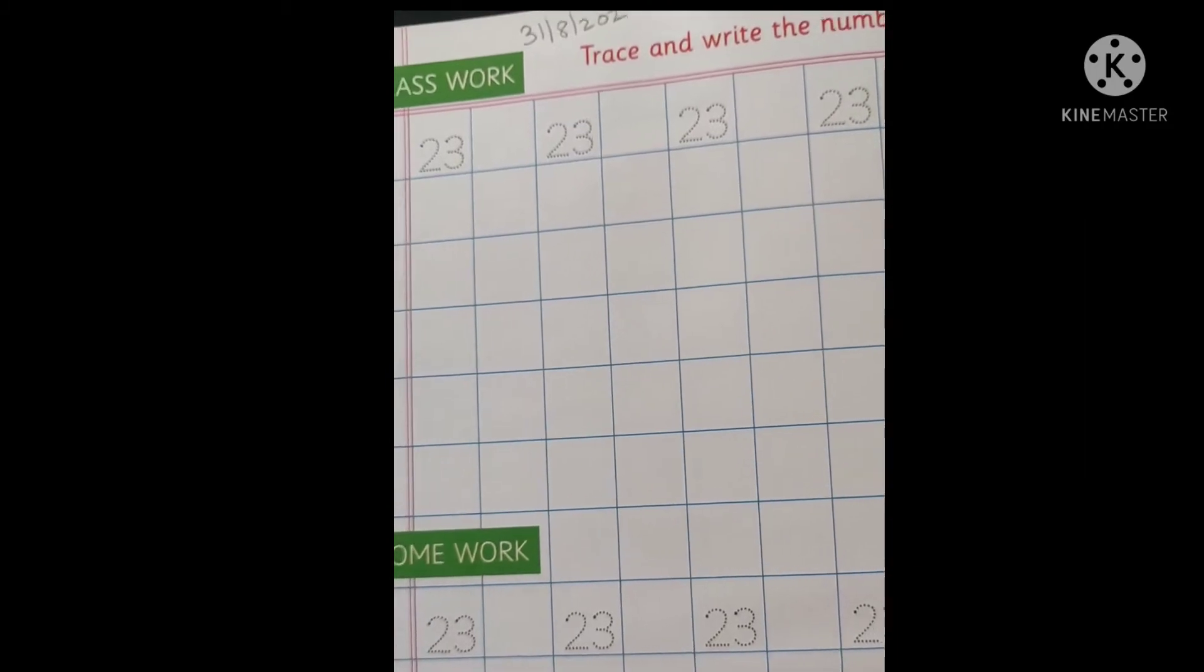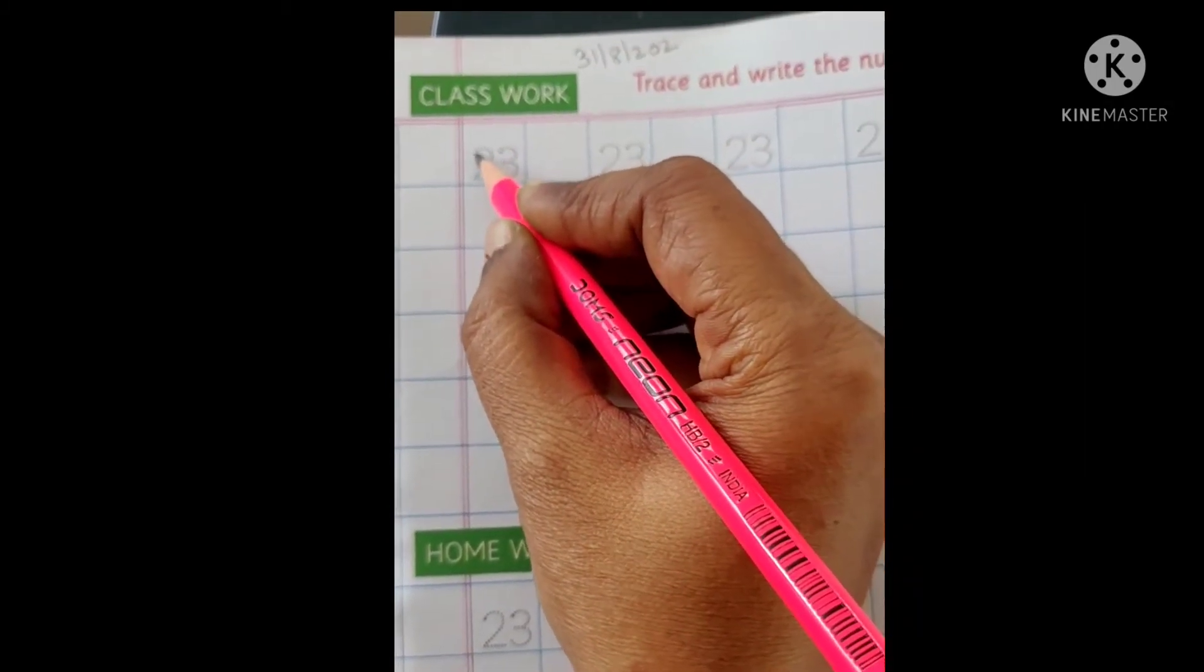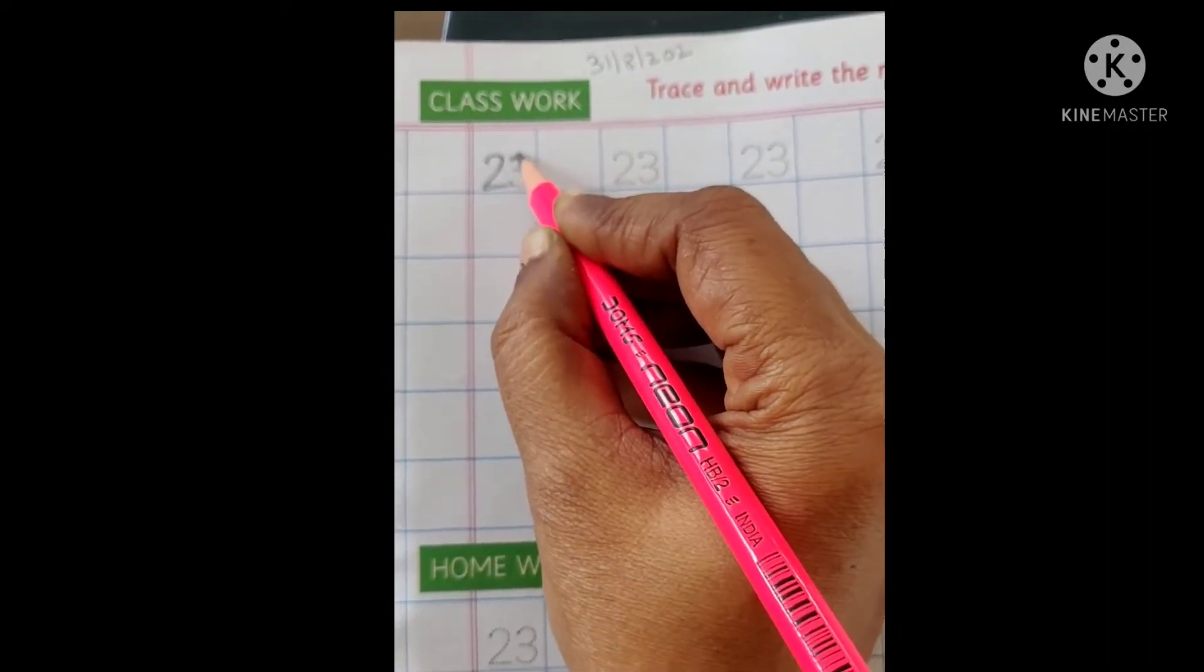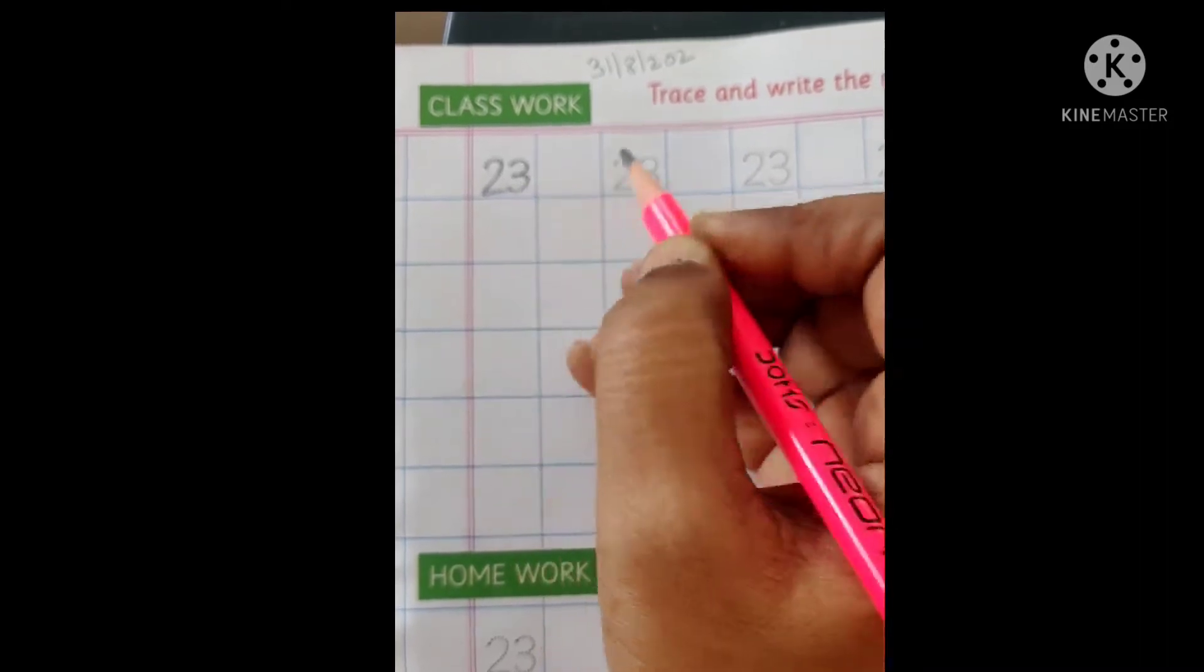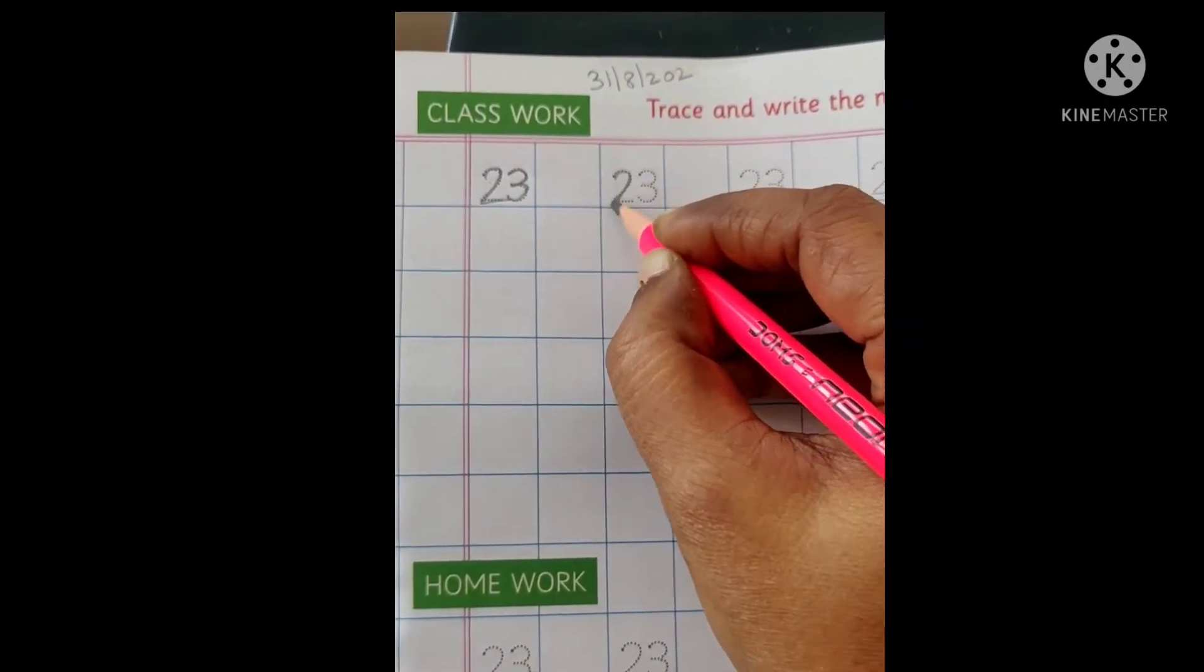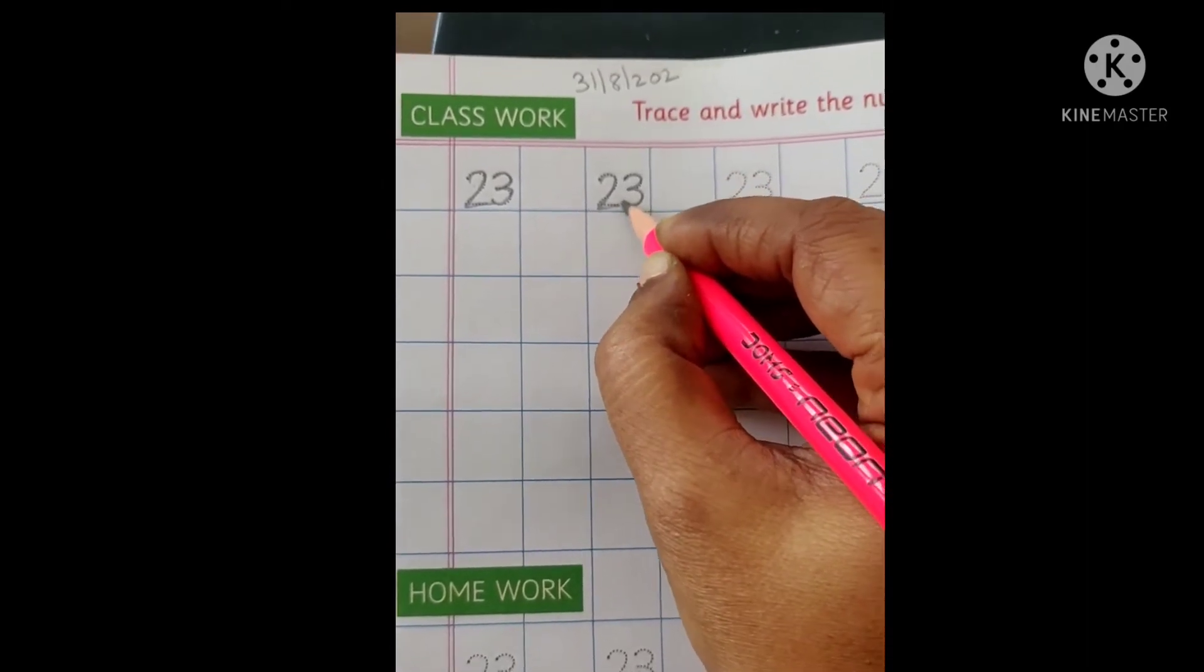Now, first you have to trace the dotted line. See here, number 2, then write 3. Okay, write 2 and then 3. This is 23.